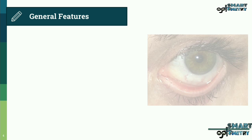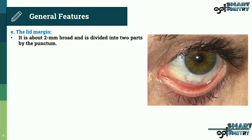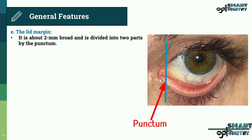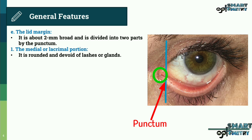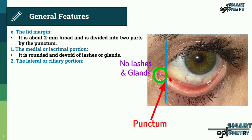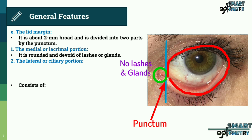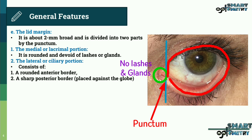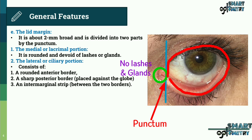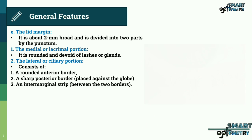Now the lid margin. It is about two mm broad and is divided into two parts by the punctum. One: the medial part, or lacrimal portion — it is rounded and devoid of eyelashes and glands. Two: the lateral part, or ciliary part, which consists of a rounded anterior border, a sharp posterior border, and an intermarginal strip.